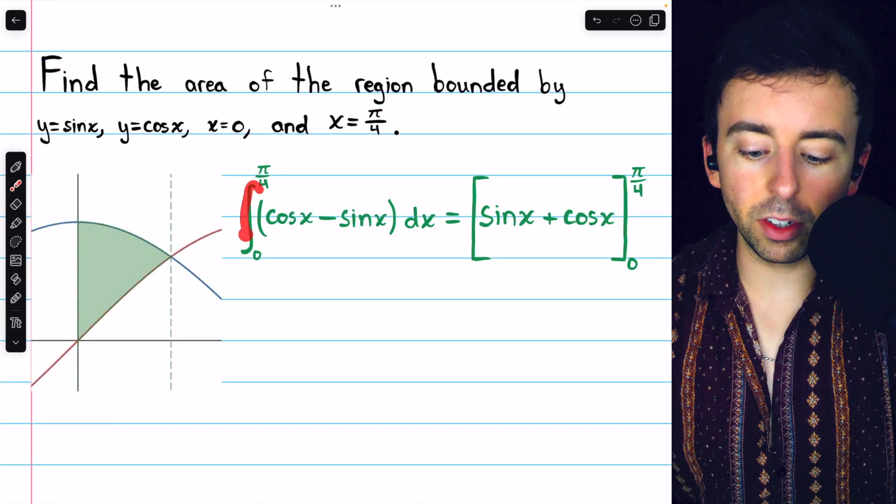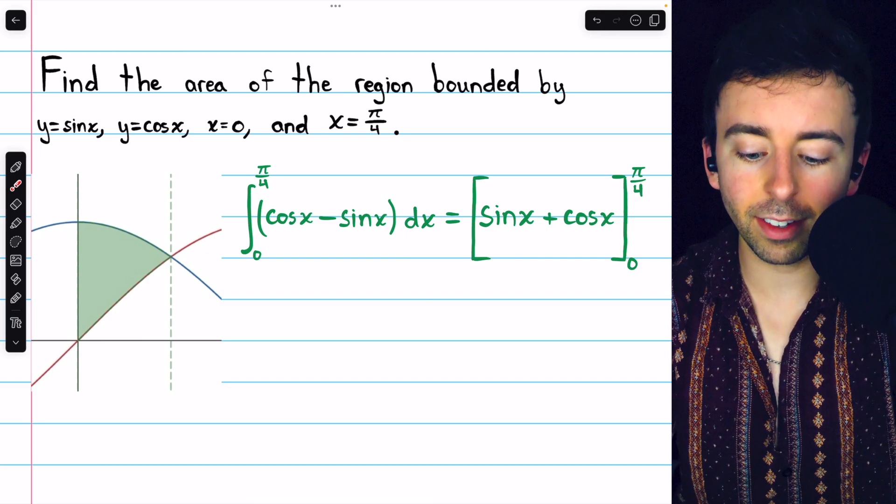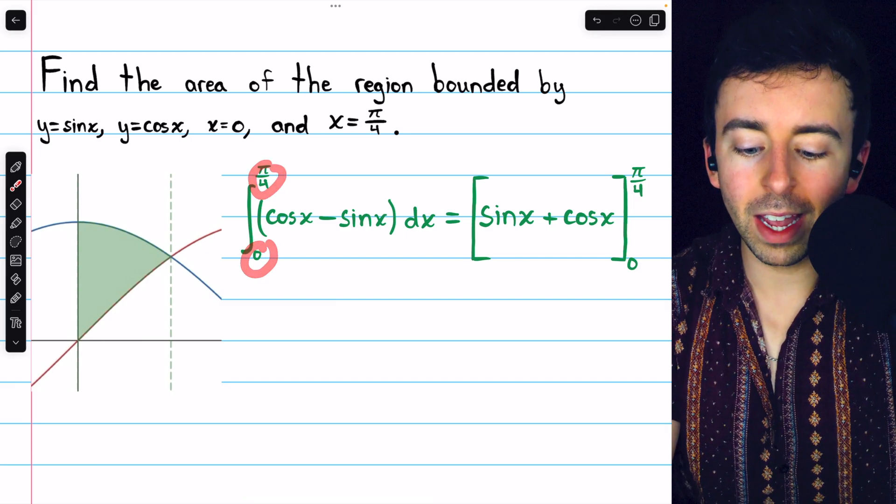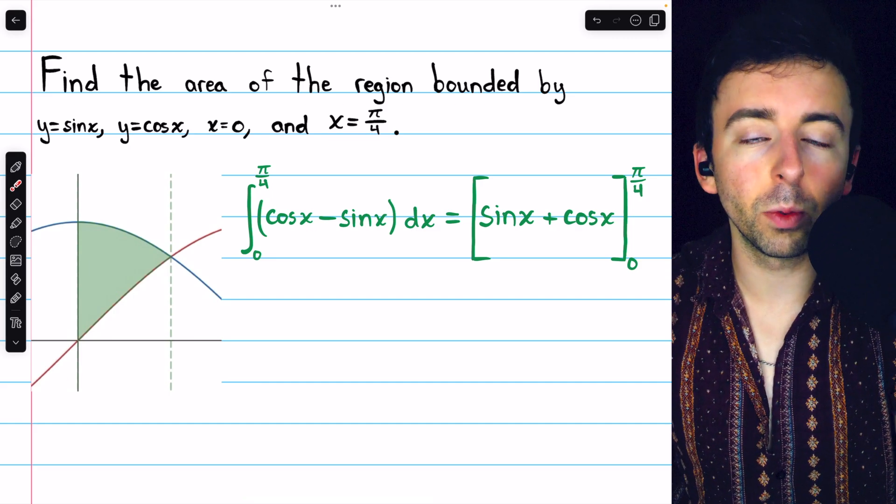Again, all we have to do is take the integral of the upper function, cosine x, minus the lower function, sine x, from zero to pi over four. Those are the bounds the question gave us, x equals zero and x equals pi over four.